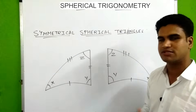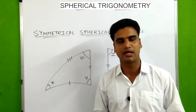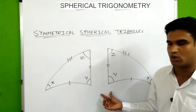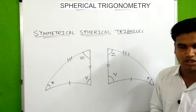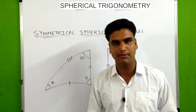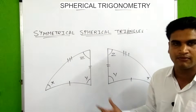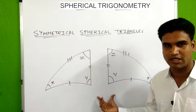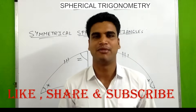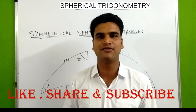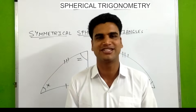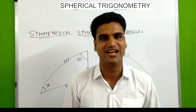The criteria for symmetrical equality are the same as congruency criteria for plane triangles, but we cannot say spherical triangles are congruent because they lie on a sphere and are three-dimensional. We can only say they are congruent if they superimpose on one another. In this video we discussed the introduction to spherical triangles. In the next video we will discuss the cosine rule and solve some numericals. Please like, share, and subscribe. Thank you.